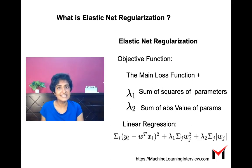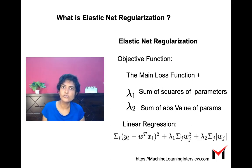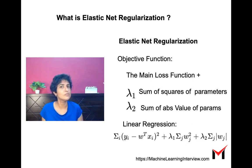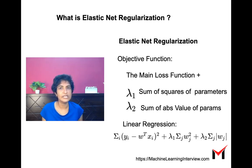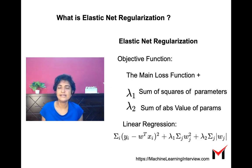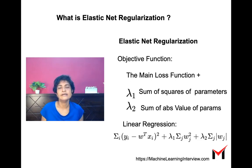Elastic net is useful when we do not know which of these two we care about more — do we want more shrinkage or do we want sparsity in our parameter space? When we are not sure, elastic net ensures we do a combination of both: we try to shrink the parameters and at the same time introduce some sparsity, and there is a trade-off here.